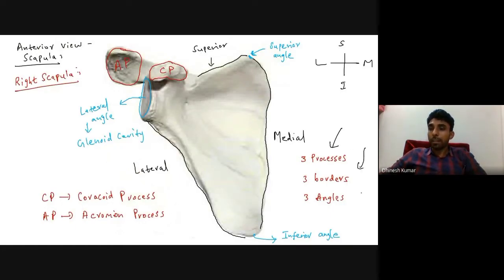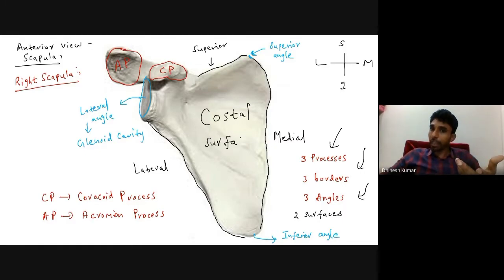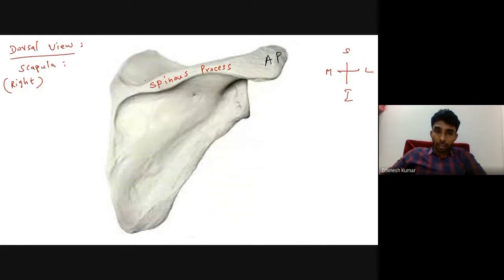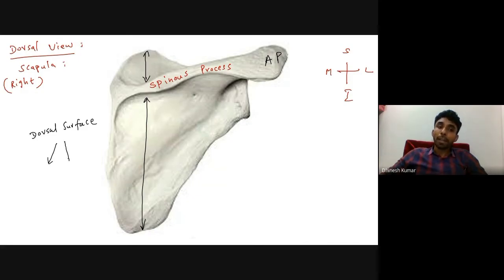We have discussed the three processes, three borders, and three angles of the scapula. Now let's discuss the two surfaces. In the anterior view, this is the costal surface — the anterior surface of the scapula is also known as the costal surface. The surface seen in the posterior view is the dorsal surface of the scapula, which is interrupted by the bony projection called the spinous process.